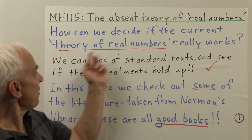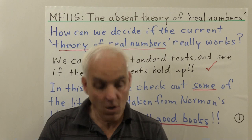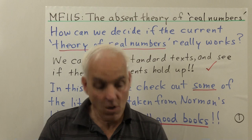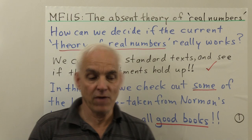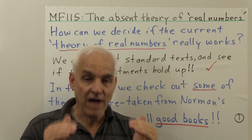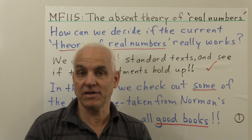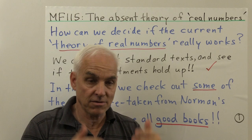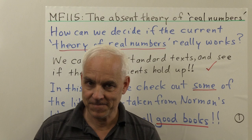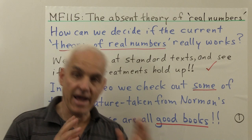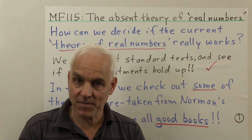But in addition, we could ask: how can we decide whether the current theory of real numbers really works, aside from just listening to Norman? One possible answer is that we can look at standard textbooks and see if their treatments hold up. In fact, we have an obligation to do this — to look at how standard textbooks tackle the difficulties and whether they can present a proper theory of real numbers that's convincing and complete. If they can, then I should retract my position.